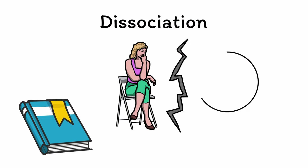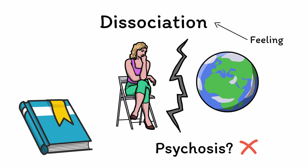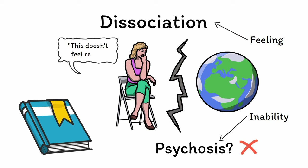Let's first define what exactly the word dissociation means. Dissociation refers to a feeling of being detached from one's sense of reality. While any mental condition that involves one's concept of reality may make you think of psychosis, dissociation and psychosis are in fact separate and distinct experiences. At its core, dissociation is a feeling of unreality, while psychosis is an inability to distinguish between reality and unreality. This means that while a person in a state of dissociation will say that their experiences don't feel real, they are still able to recognize that they are real.